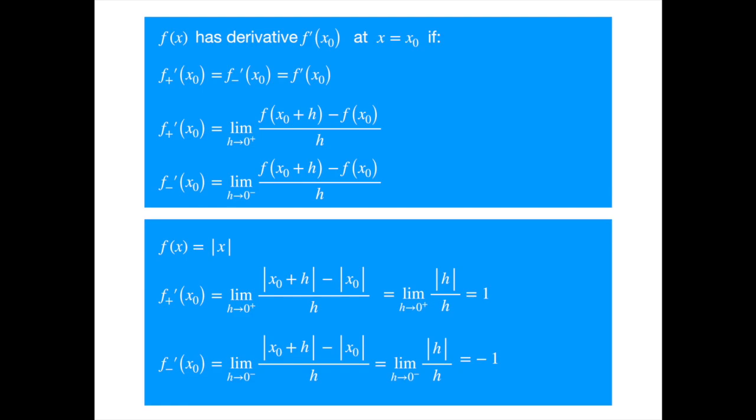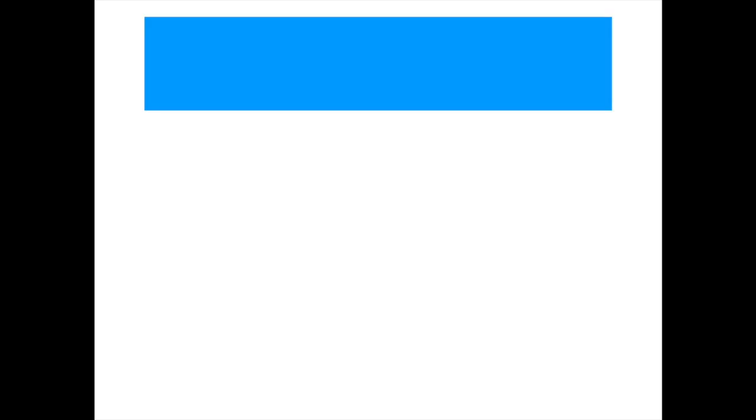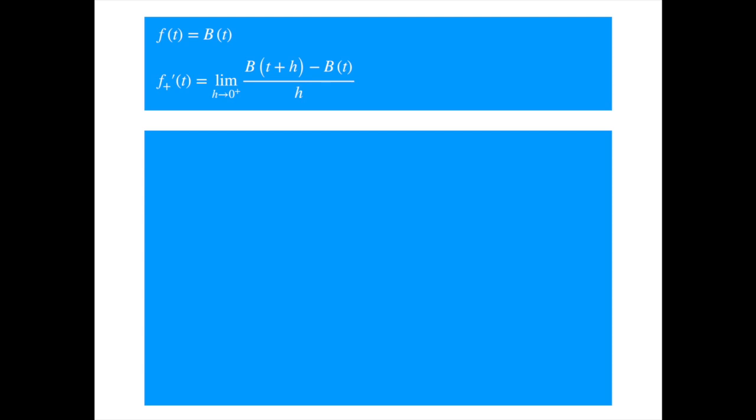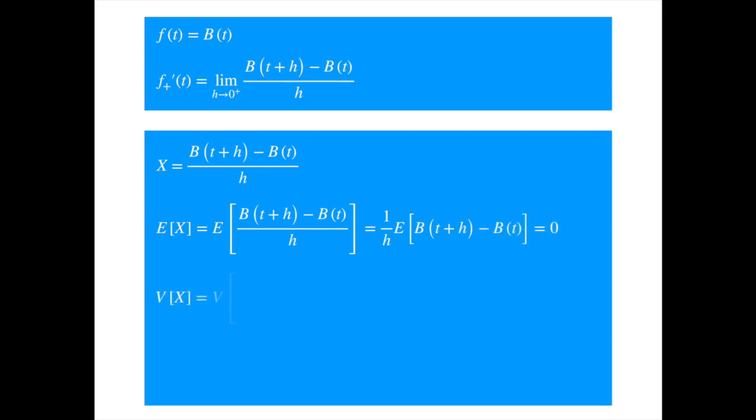We can now tackle the Brownian motion path, which we show as a function of t. Substituting the Brownian motion for the function in the right limit, we get the expression. Now, to simplify the expression, we have to use a slightly different technique as we are dealing with a stochastic variable. Let's represent the expression inside the limit by X. We can easily calculate its mean and variance.